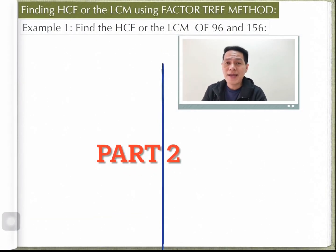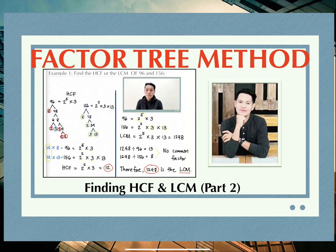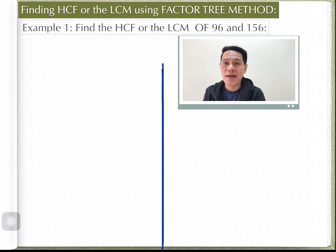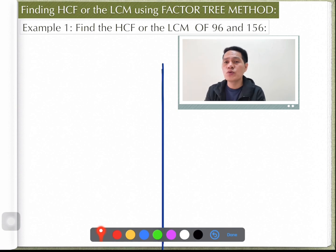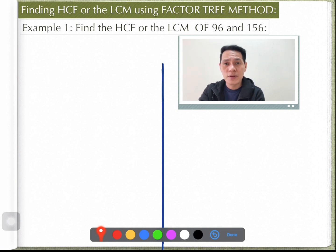Next we are going to find the HCF and LCM using the factor tree method. The problem is: find the HCF and LCM of 96 and 156. I'm going to show you how to solve this step by step using the factor tree method.